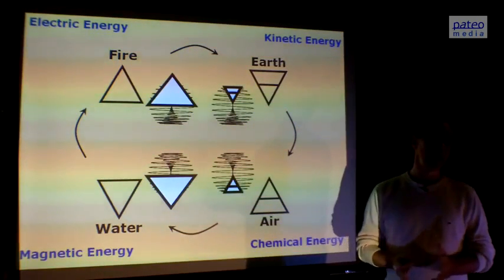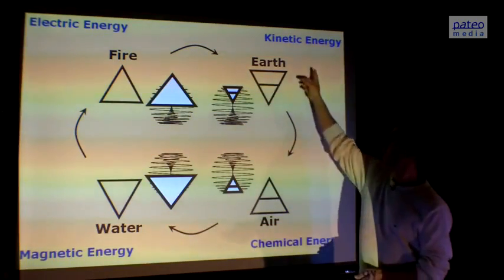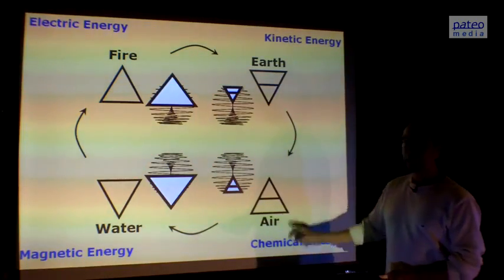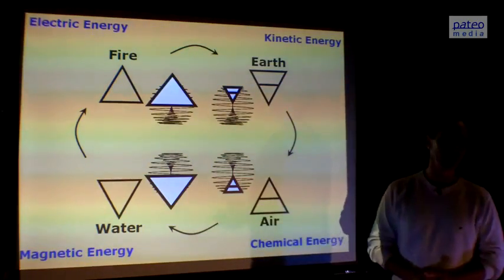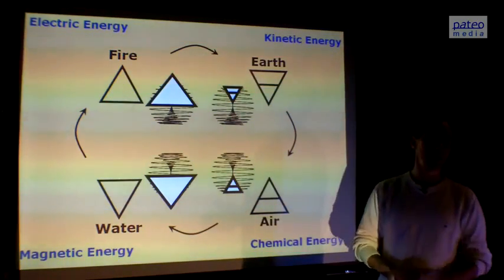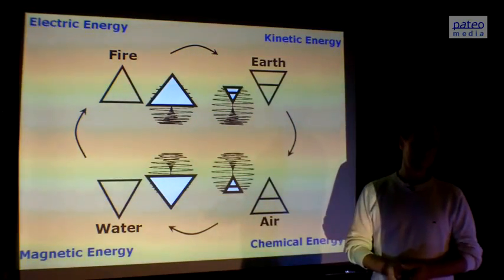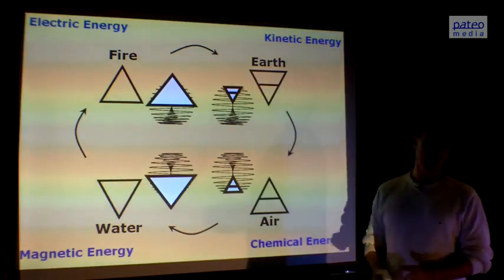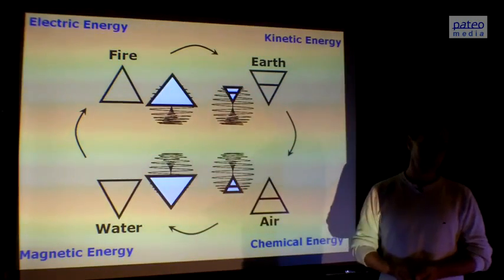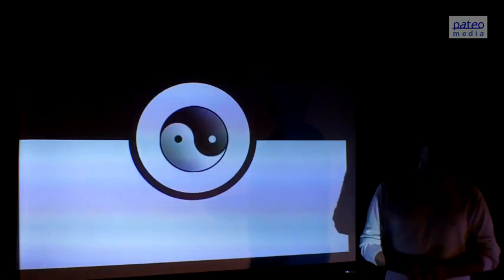There are also four types of energy. In fact, there are shadows of energy. Kinetic energy is related to earth, chemical energy is related to air, magnetic energy is related to water as the work of Emoto clearly shows, and electric energy is related to fire. So again we see that the four types of energy are related to shadows they bring on the wall, so to say.